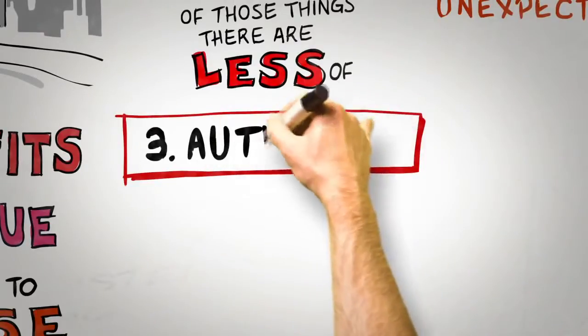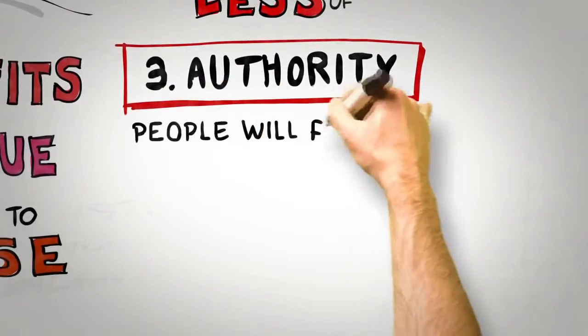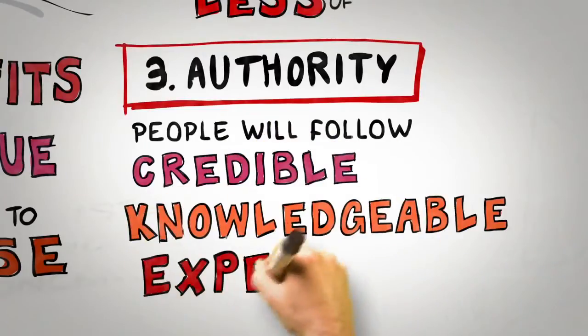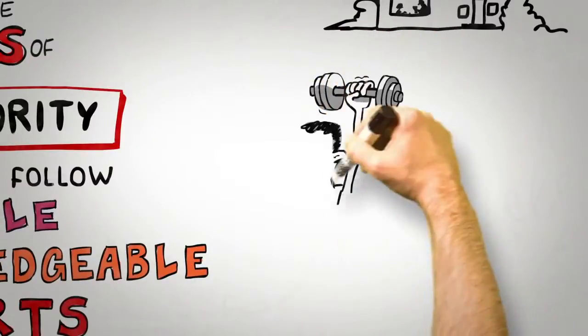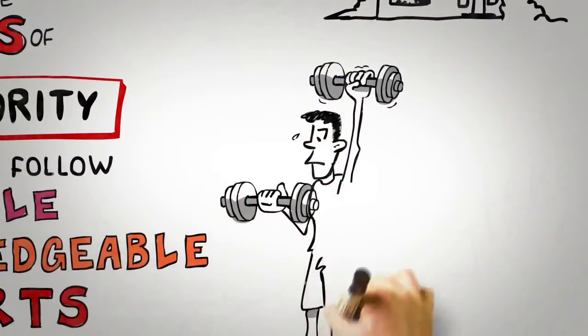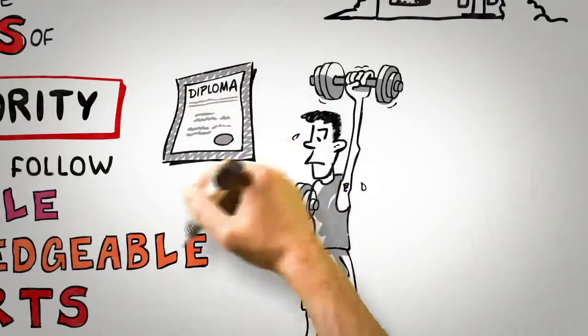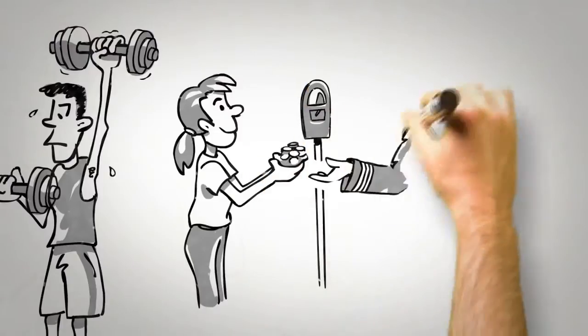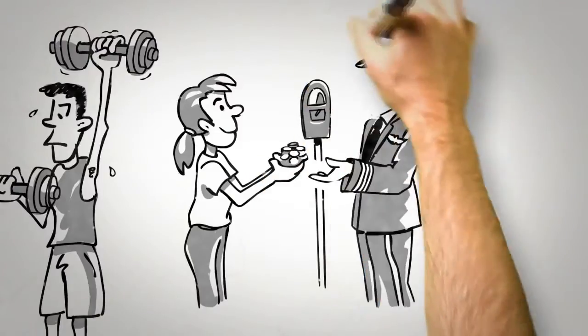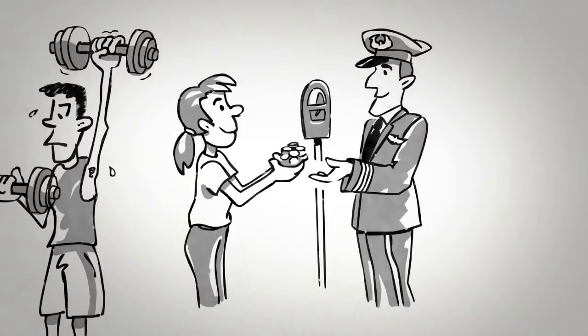Our third principle of influence is the principle of authority, the idea that people follow the lead of credible, knowledgeable experts. Physiotherapists, for example, are able to persuade more of their patients to comply with recommended exercise programs if they display their medical diplomas on the walls of their consulting rooms. People are more likely to give change for a parking meter to a complete stranger if that requester wears a uniform rather than casual clothes. What the science is telling us is that it's important to signal to others what makes you a credible, knowledgeable authority before you make your influence attempt.